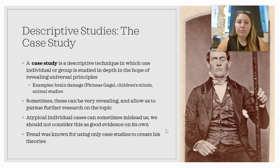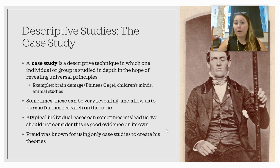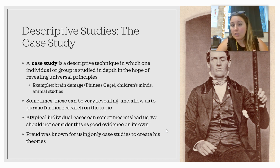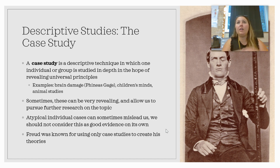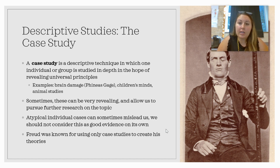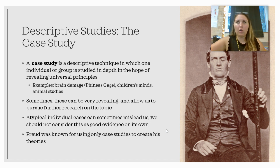Case studies are used when things are rare and it's hard to study a large population. For example, when a person has brain damage, researchers might study them in a case study. Some psychologists have used small groups of individual children to study children's minds and make broader conclusions. And in animal studies, you can study a small group of animals in depth to try to reveal more generalized principles applicable to the whole species.